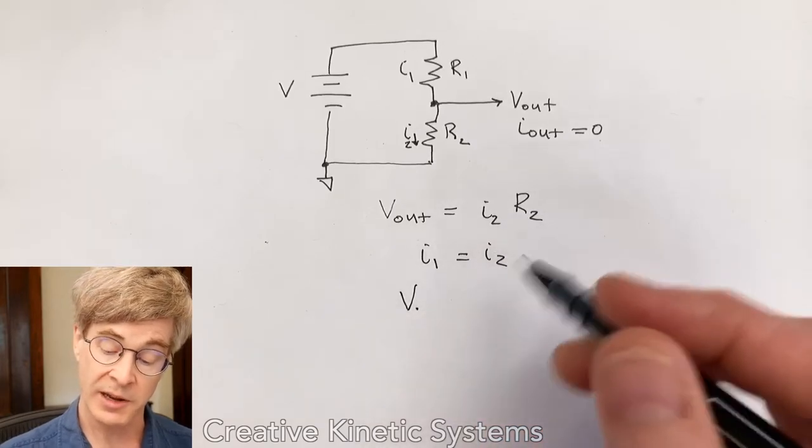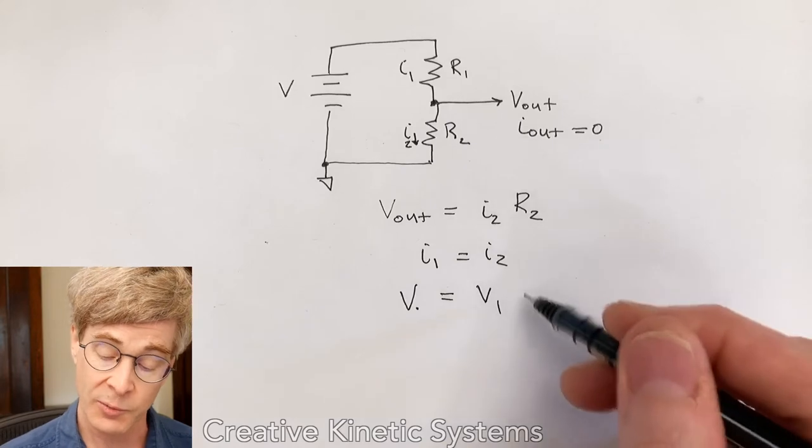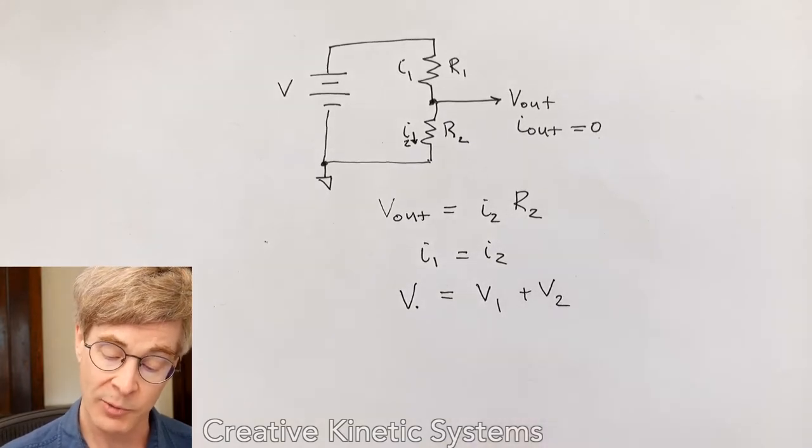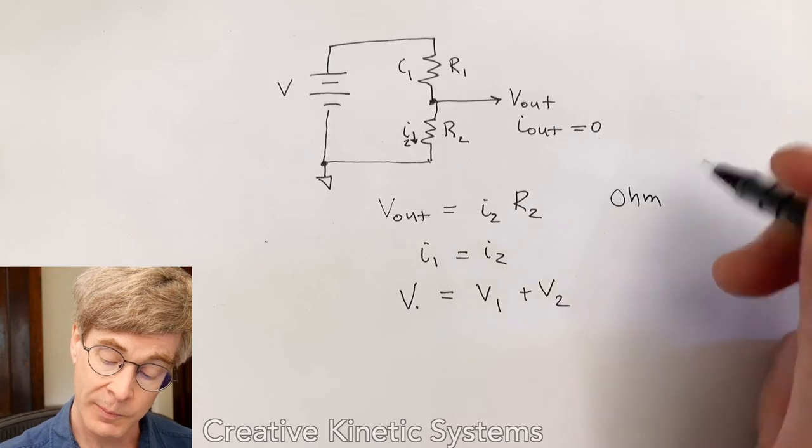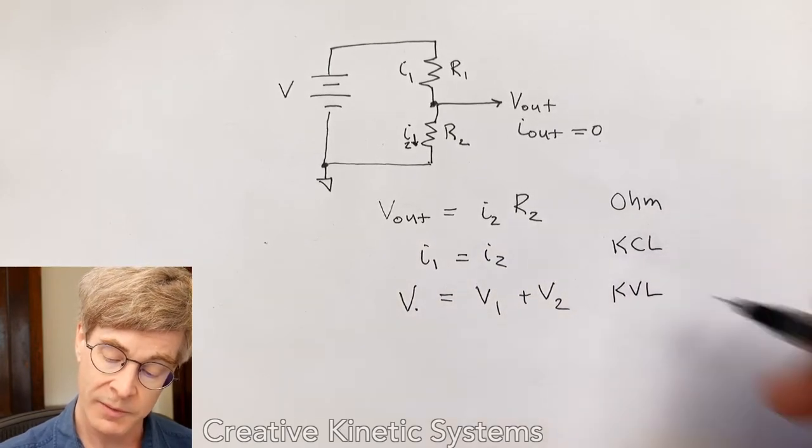So V, which is the input here, is equal to V1, the voltage drop across resistor 1, and V2, the voltage drop across resistor 2. So once again, this was Ohm, this was current law, and this was voltage law.